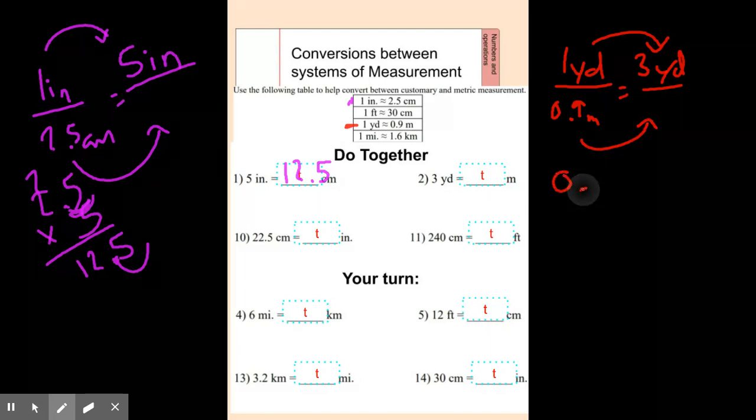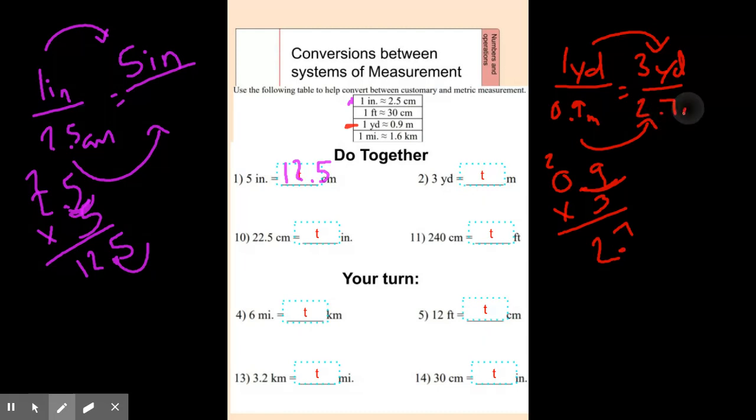So 0.9 times 3. 3 times 9 is 27. 3 times 0 is 0 plus 2 is 2. And we have to move it one decimal place here. So it's going to be 2.7 meters.